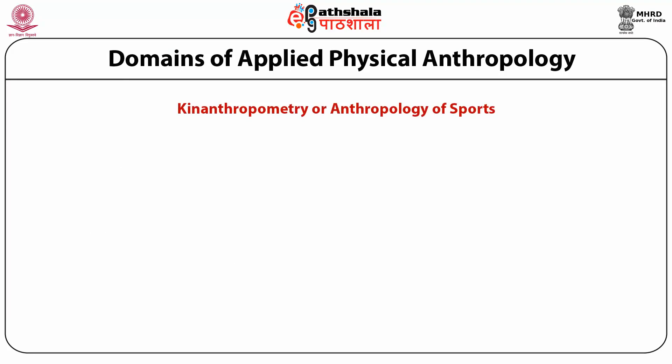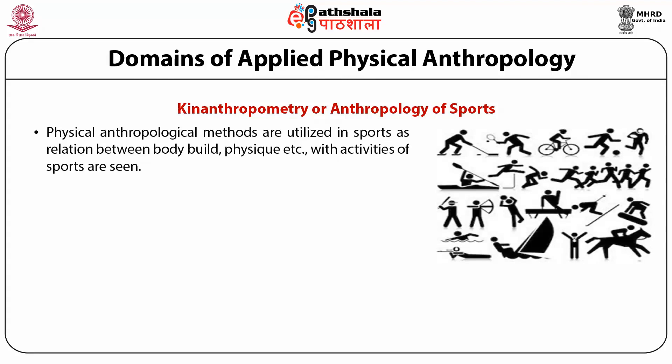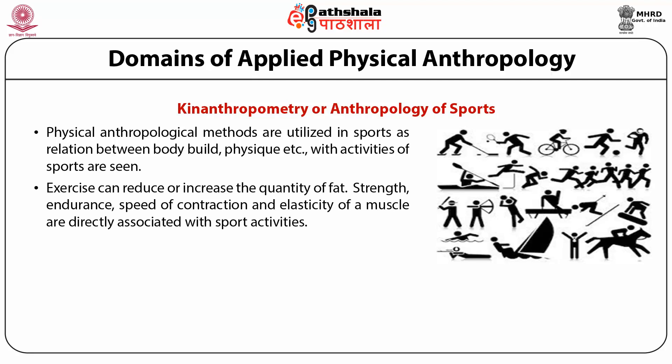Kin anthropometry or anthropology of sports: physical anthropological methods are utilized in sports as relations between body build, physique, etc. are seen with activities of sports. Physical activity capacity determined by heritage and health is called potential physical capacity, whereas the capacity developed through physical exercise is termed acquired capacity. Exercise can reduce or increase the quantity of fat, strength, endurance, speed of contraction, and elasticity of muscles, which are directly associated with sports activities.